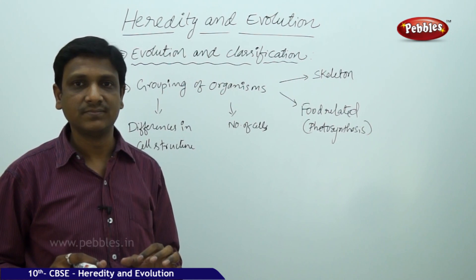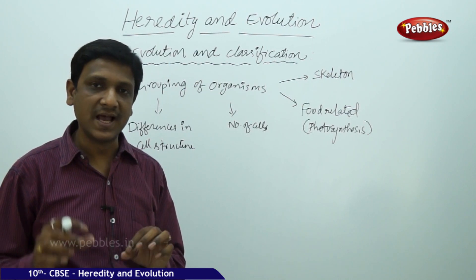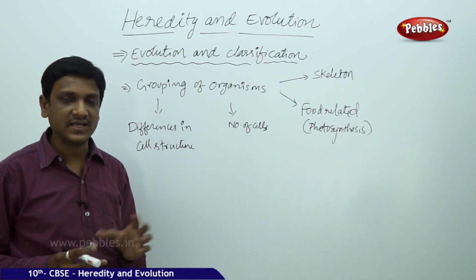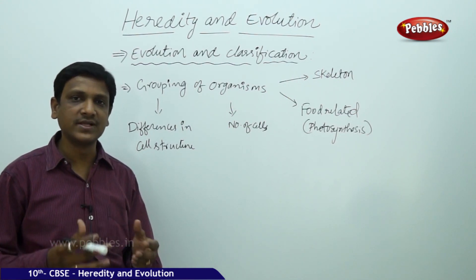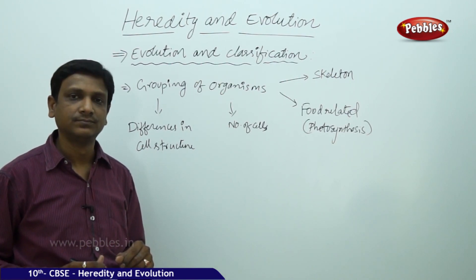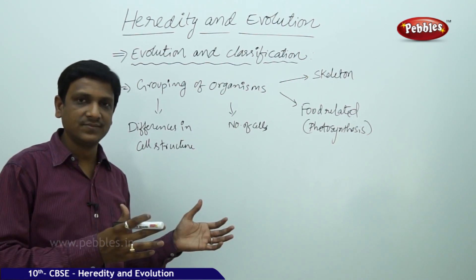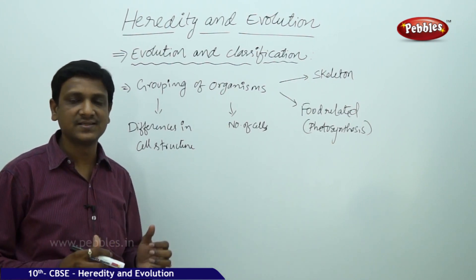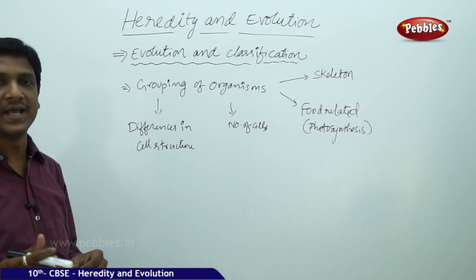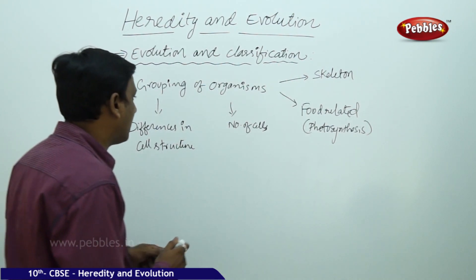The cell structure differs between certain organisms. Some organisms do not have a nucleus — these are prokaryotes. Some organisms have a well-developed nucleus in which the genetic material is present — eukaryotes. In prokaryotes, the genetic material is present in the cytoplasm, not enclosed in a nucleus. So organisms are divided into prokaryotes and eukaryotes. There is also a classification based on number of cells: unicellular and multicellular.